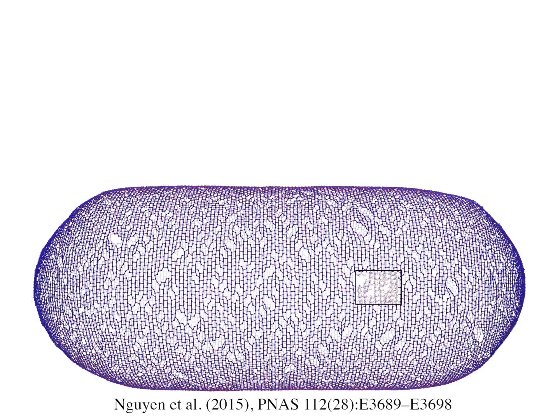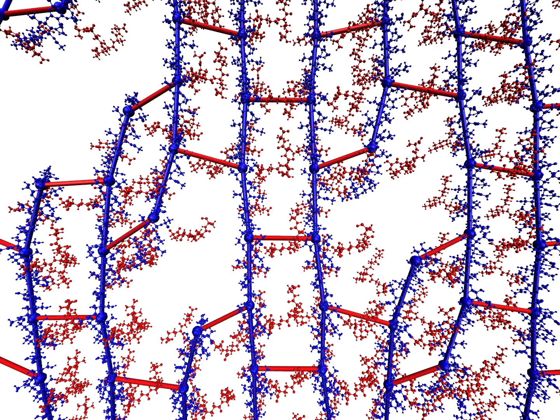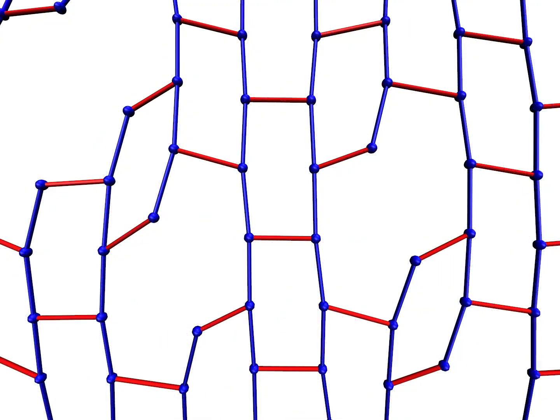In previous work, we studied bacterial cell wall synthesis by building a coarse-grained model of the cell wall in which we represented glycan strands as chains of beads, with one bead representing one tetrasaccharide.